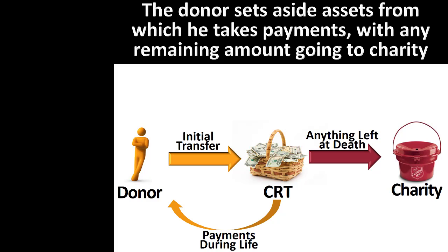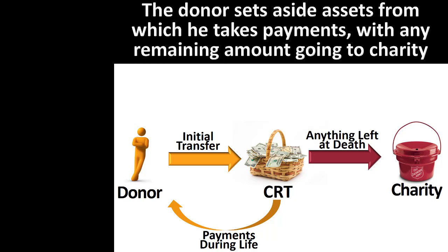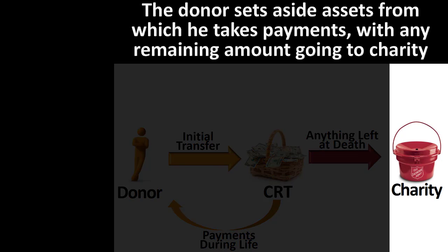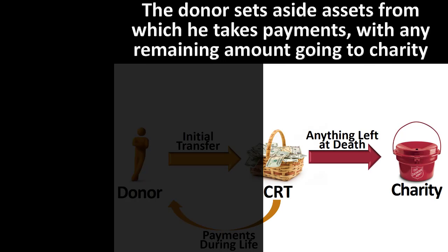The charitable remainder trust differs from the charitable gift annuity in that it is typically a donor-created vehicle. Whereas charitable gift annuities are issued, administered, and managed by the charity, the charitable beneficiary of a charitable remainder trust may not even know of its existence until receiving the final distribution check.